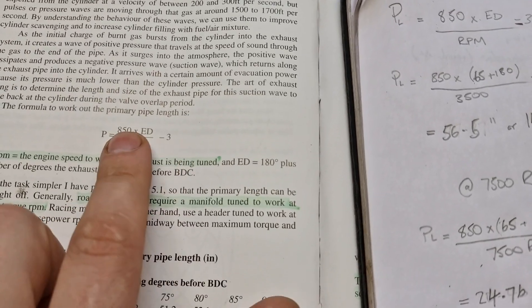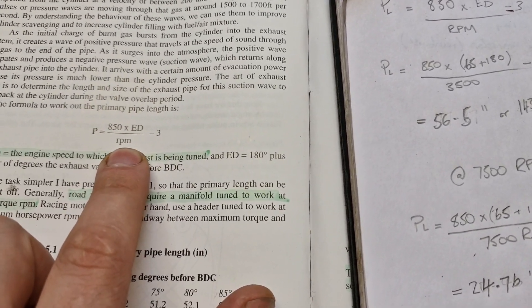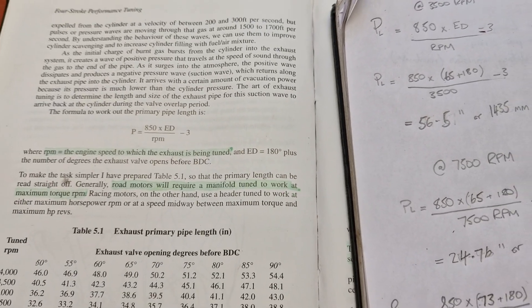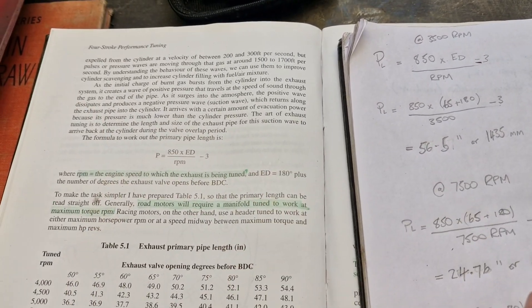This is the calculation that I'm looking at for the overall length of the primary and the secondary part of the manifold. That is from here where the gas enters the manifold to here, that length.